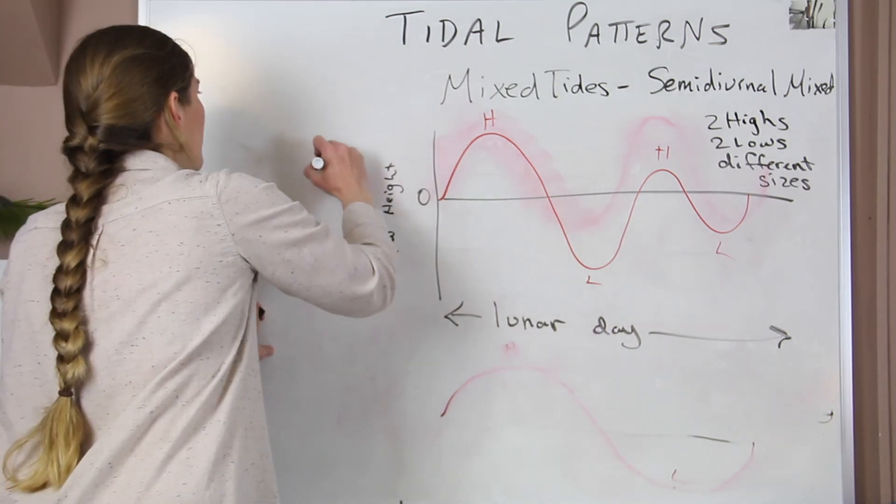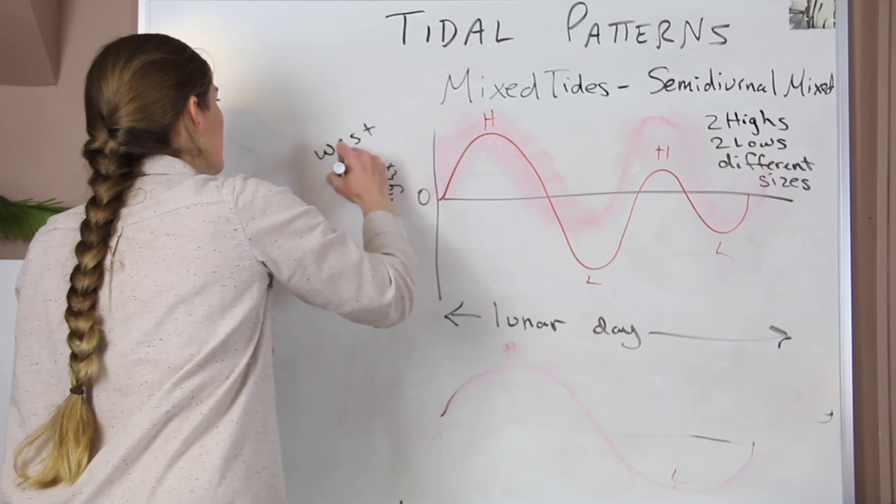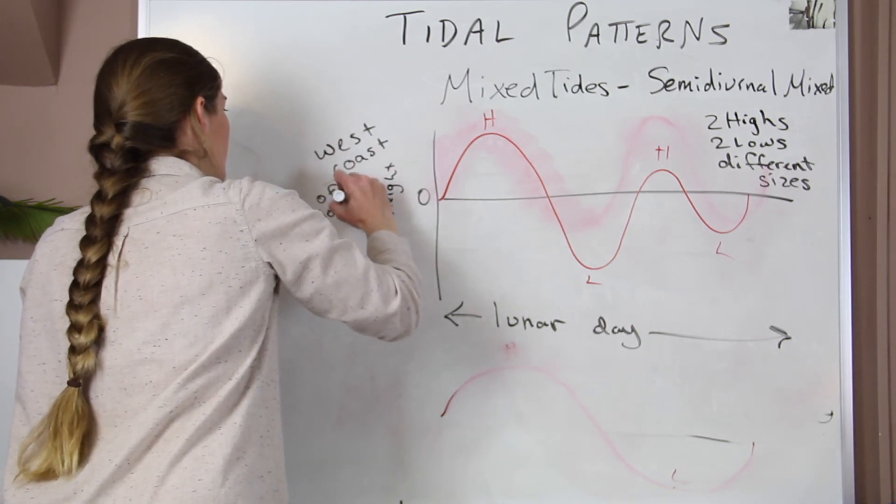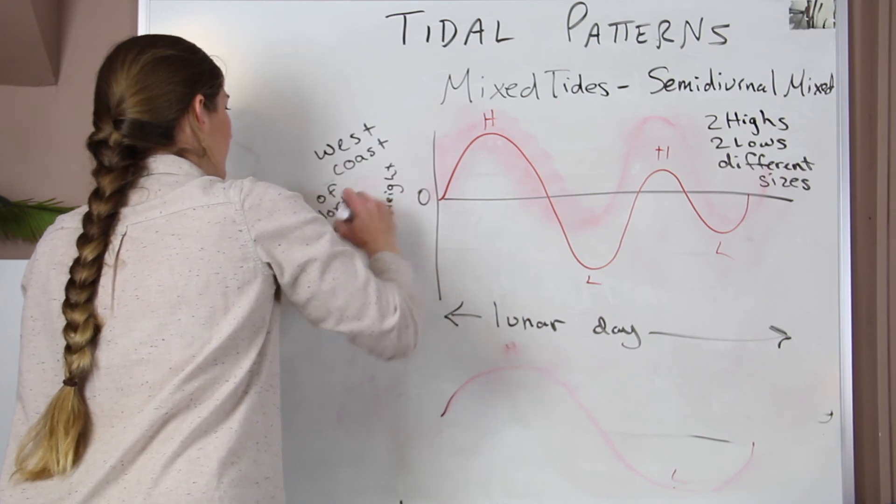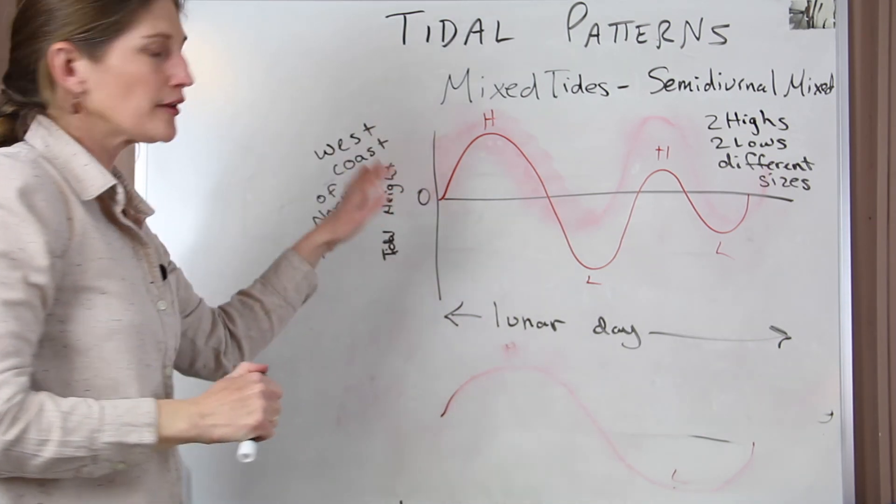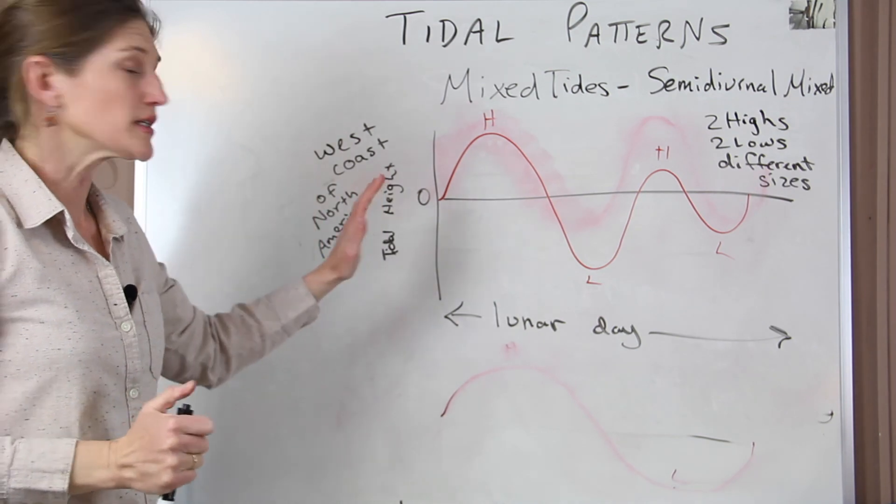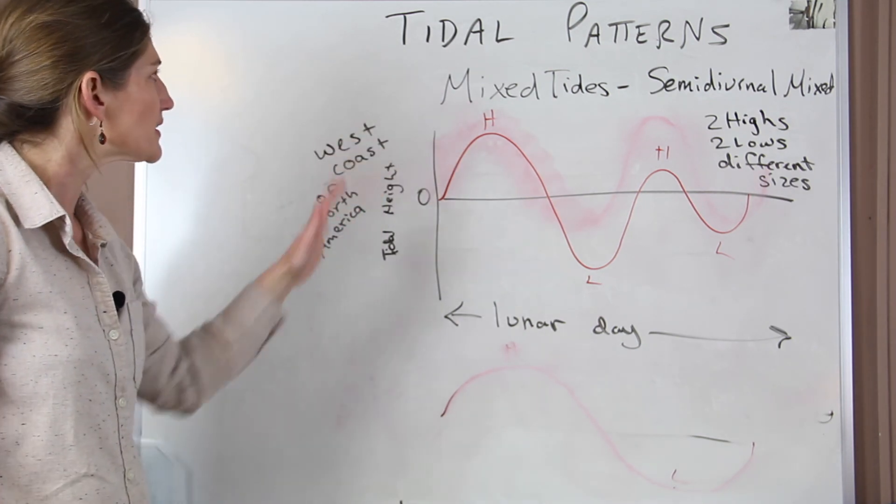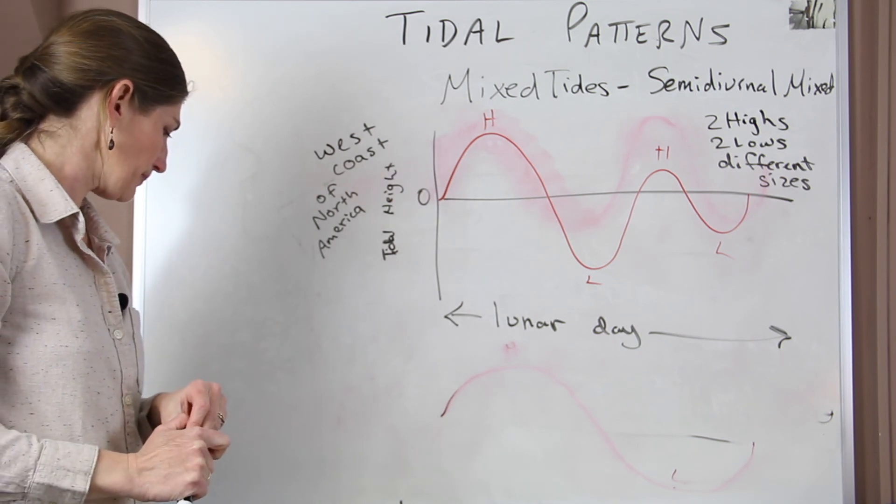So this is really common on the west coast, west of North America. So places in California, Oregon, Washington, up into British Columbia will be experiencing these mixed tides. Alright, and that's it.